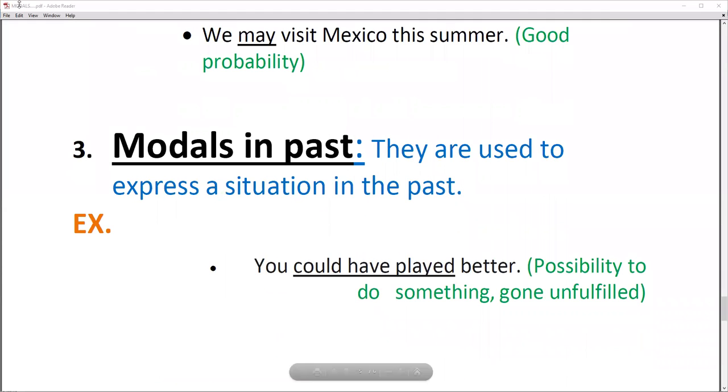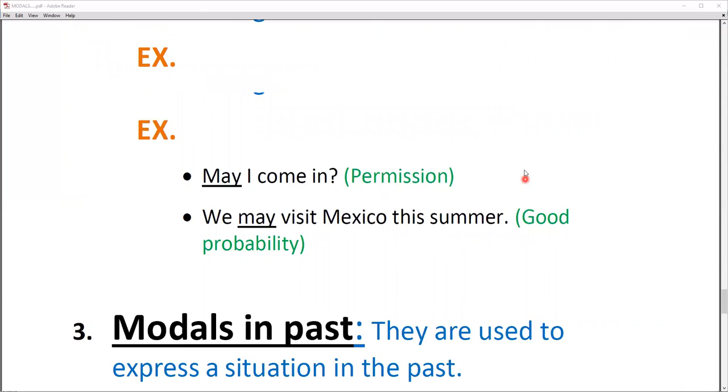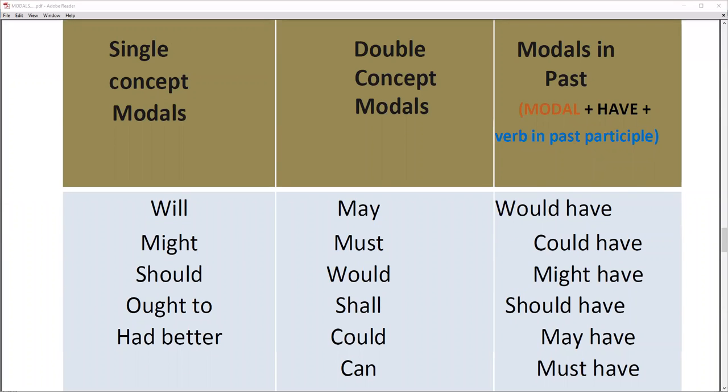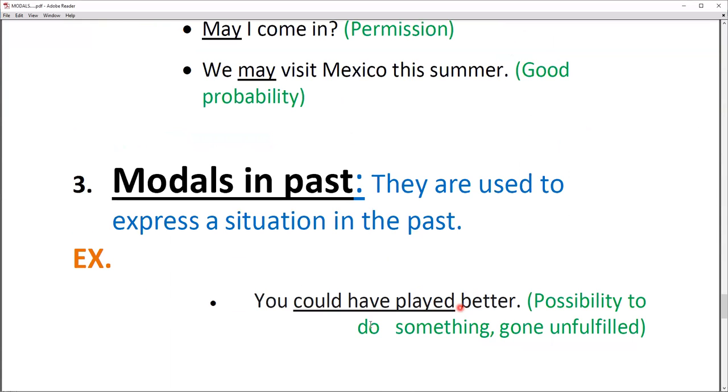Modals in Past. They are used to express a situation in the past. The formula: modal plus have plus past participle, means verb's third form. So here we used verb's third form is played, and have according to the model. Could have played. It is modal in past, possibility to do something gone unfulfilled. You could have played better.